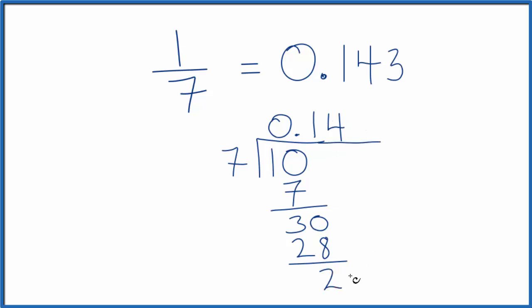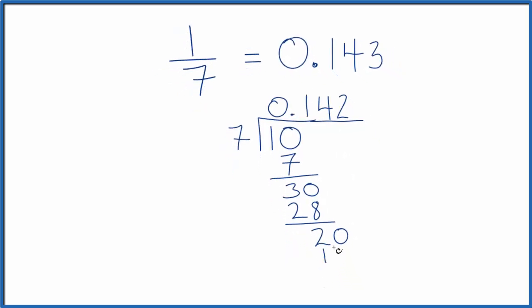Move over another decimal place, this is 20. 7 goes into 20 just 2 times. 2 times 7 is 14, that gives us 6. We make that 60. We move over. 7 times 8 is 56, and this number keeps going for a little while.